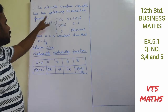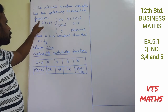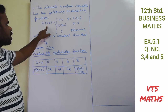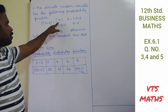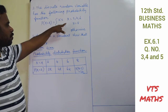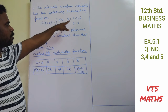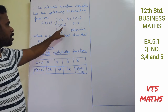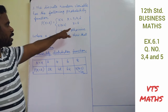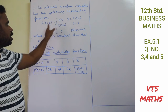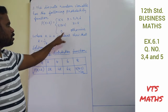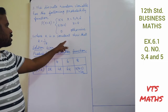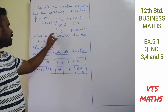The discrete random variable has the following probability function: p(x) = kx where x = 2, 4, 6; p(x) = k(x-2) where x = 8; and p(x) = 0 otherwise, where k is a constant. Show that the value of k is equal to 1/18.